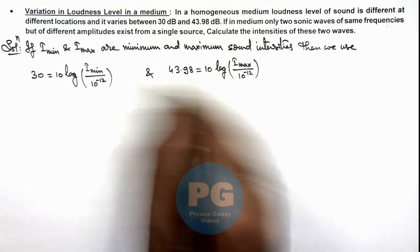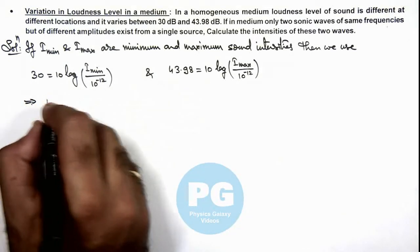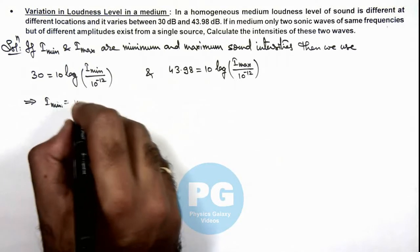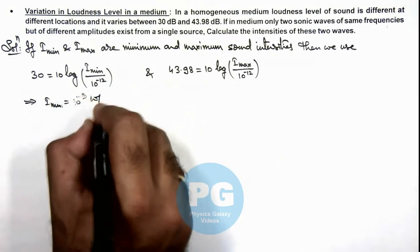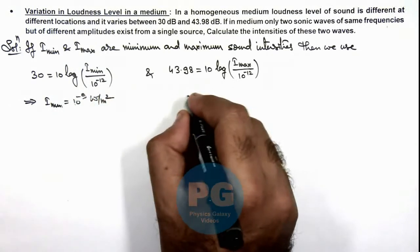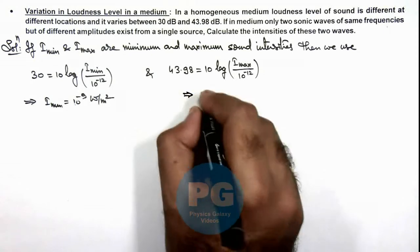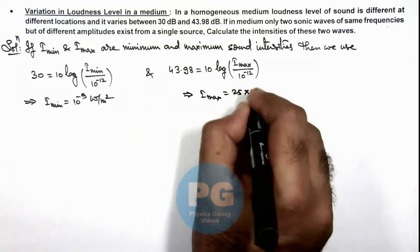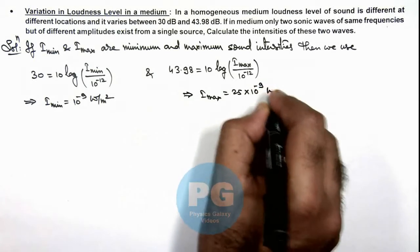And simplifying these values will be getting the minimum intensity after superposition of the 2 waves is 10 to power minus 9 watt per meter square, and here it gives the value of I_max is equal to 25 into 10 to power minus 9 watt per meter square.